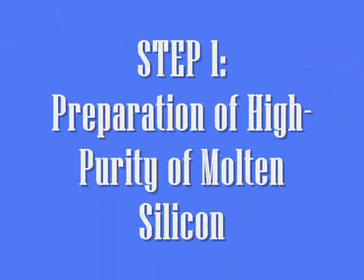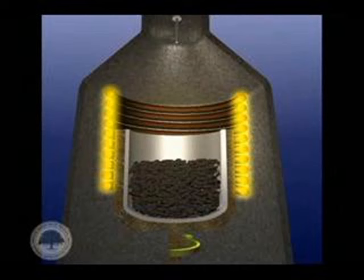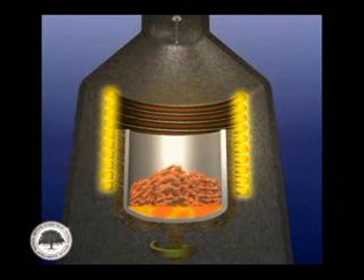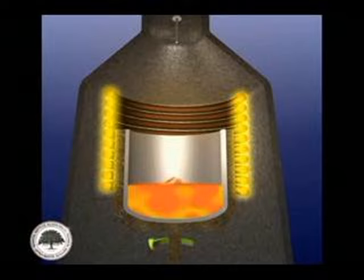Step 1: Preparation of high purity molten silicon. In the Czochralski process, high purity silicon is used as the melt to form single crystal silicon. Silicon dioxide can be used to prepare high purity molten silicon. The substance is heated to its melting point in a crucible made of quartz. The supersaturated molten solution will become the source material for the silicon wafer.